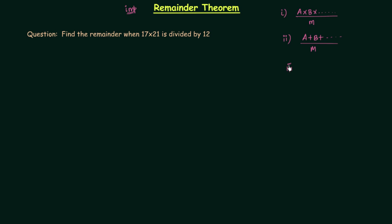The third case is when a number is raised to a large power n and then divided by another number. Since a is an integer raised to a large power, you will have a very large number in the numerator. Dividing it by m and finding out the remainder is not an easy task, and to make it easy we will use remainder theorem.